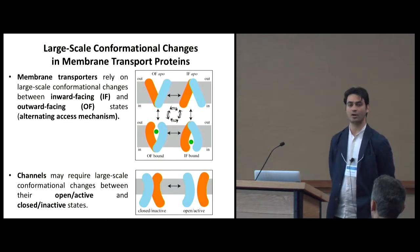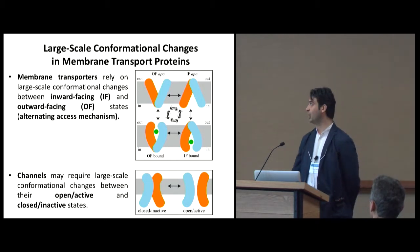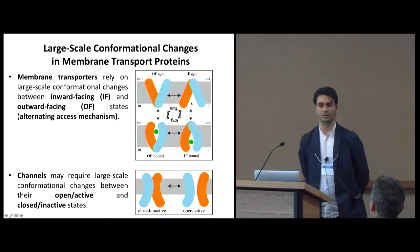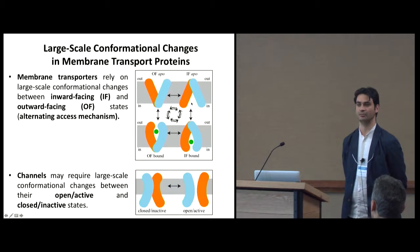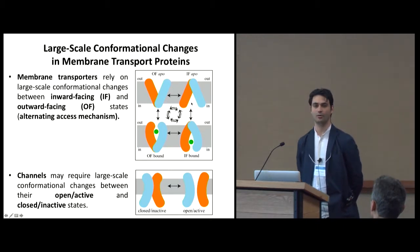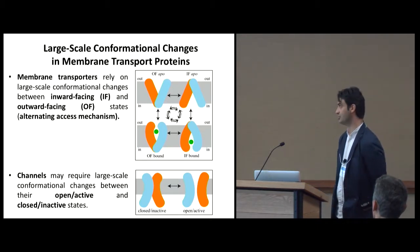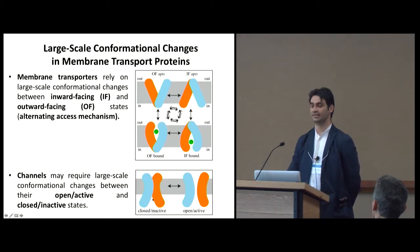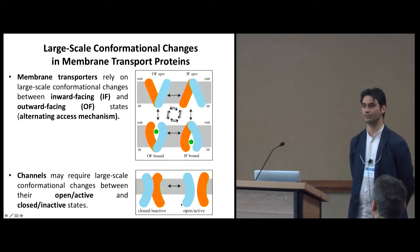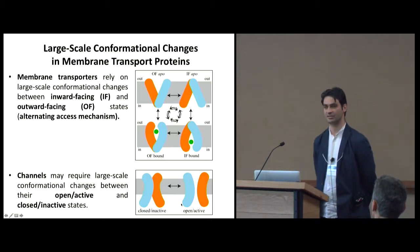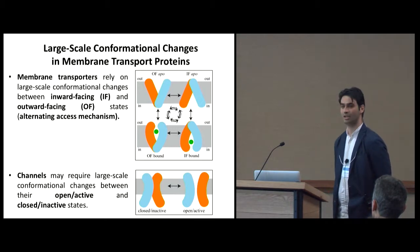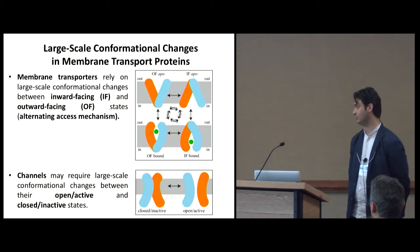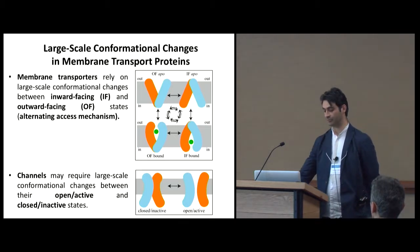Membrane transporters do not want the binding site of the protein to be accessible to both sides of the membrane at the same time — this is how they become active rather than passive membrane transporters. For channels, which are passive membrane transport proteins, larger-scale conformational changes also occur in many cases.